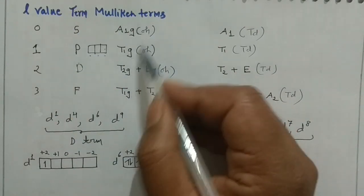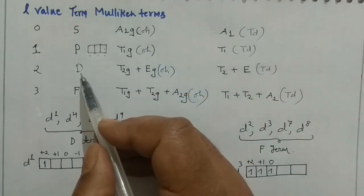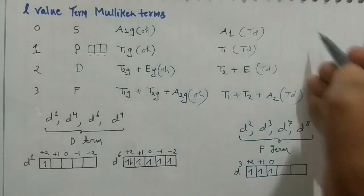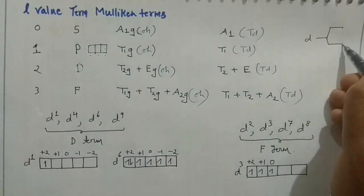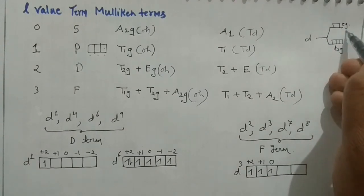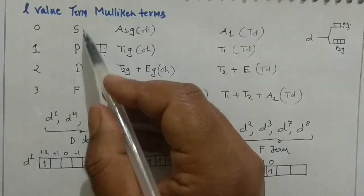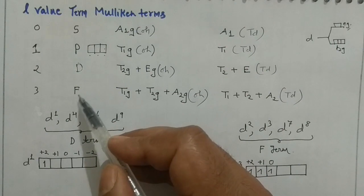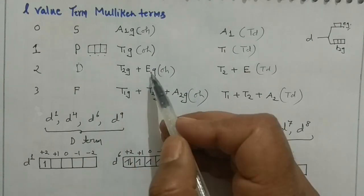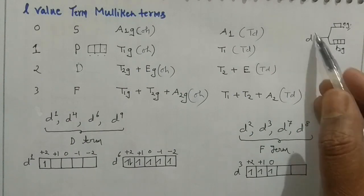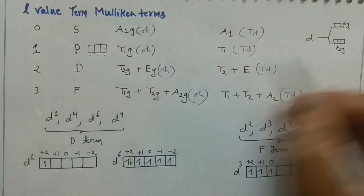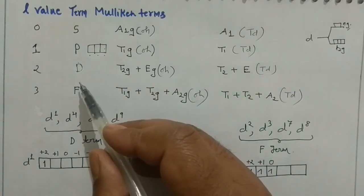So S (A1g) and P (T1g) do not split. For the D term (L = 2), just like d orbitals split in crystal field theory, the D term splits into T2g and Eg in an octahedral field. Note: capital D and capital E refer to spectroscopic ground state terms, while small d and small e refer to the wave functions (orbitals). These are different — D is your term, and small d is your wave function.